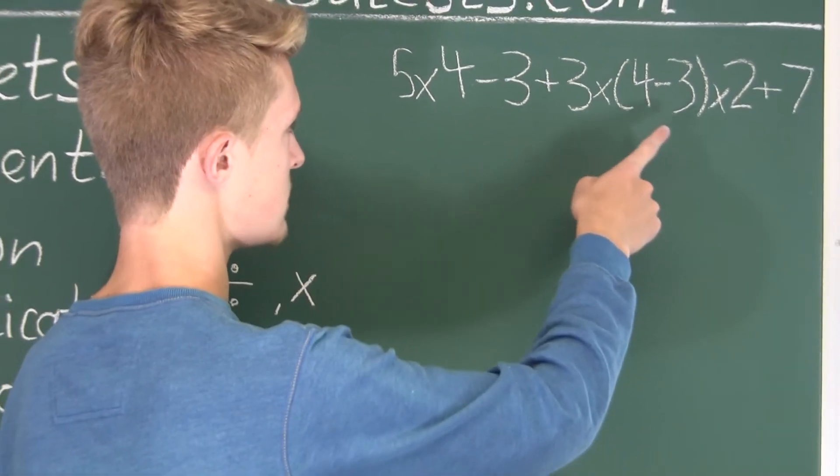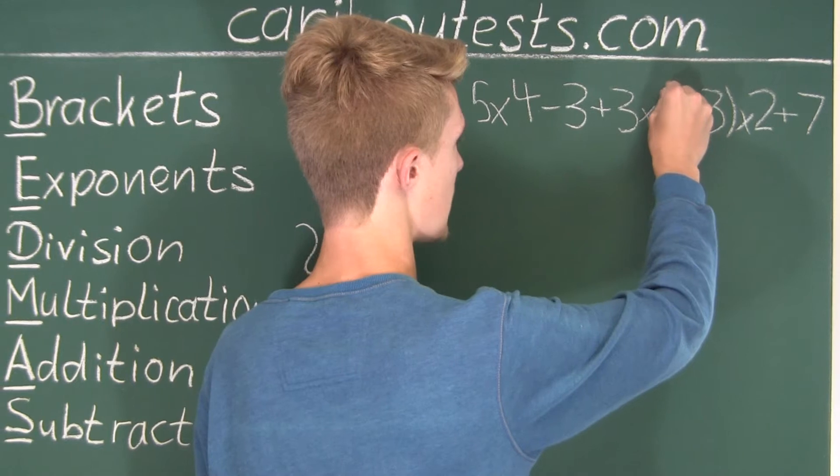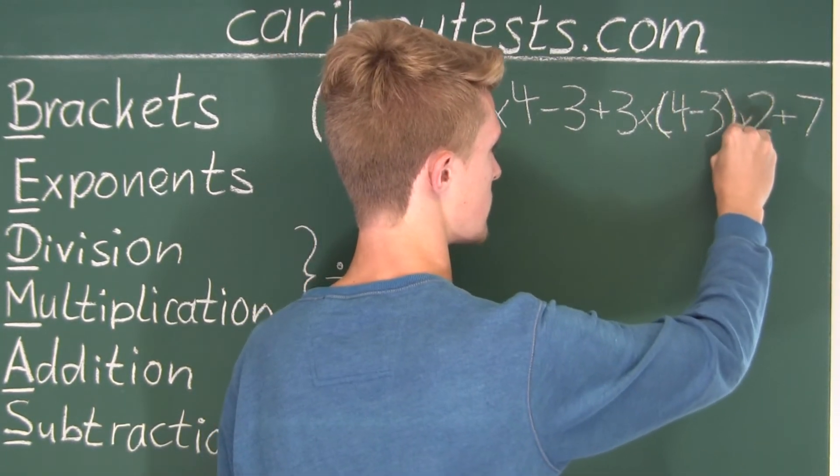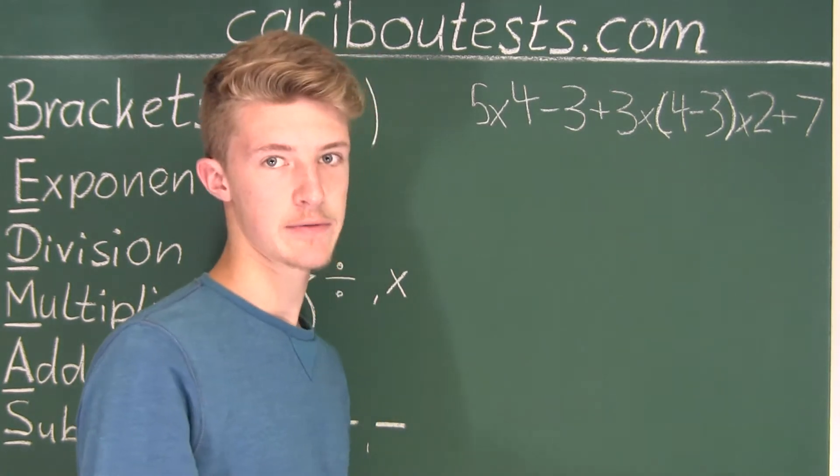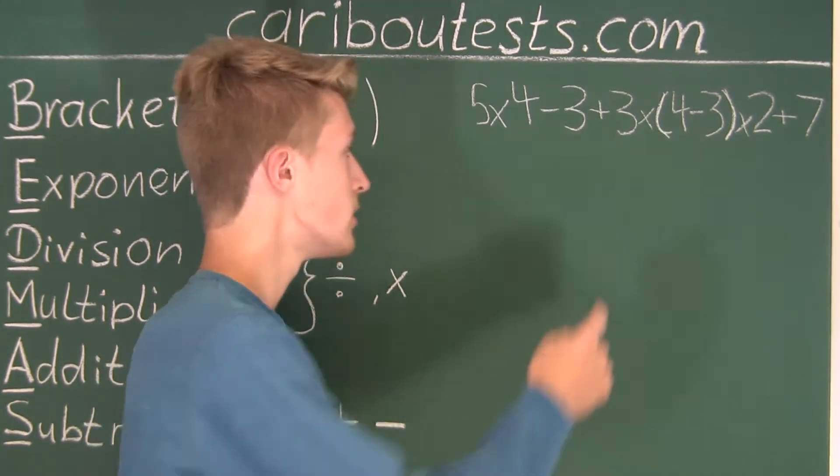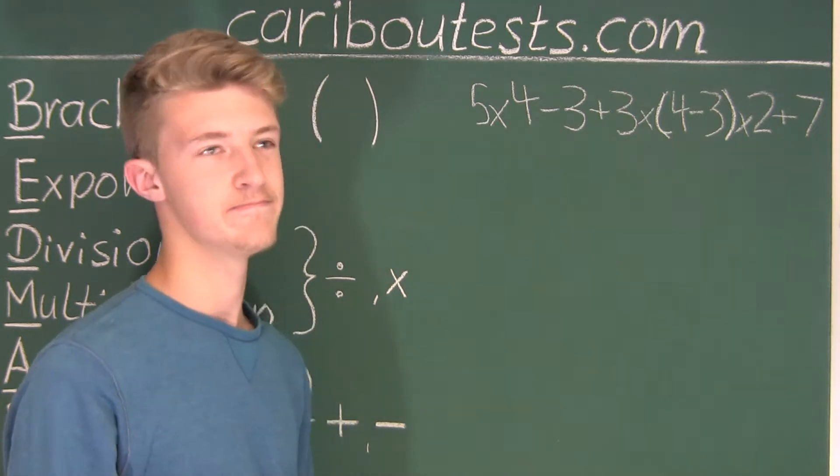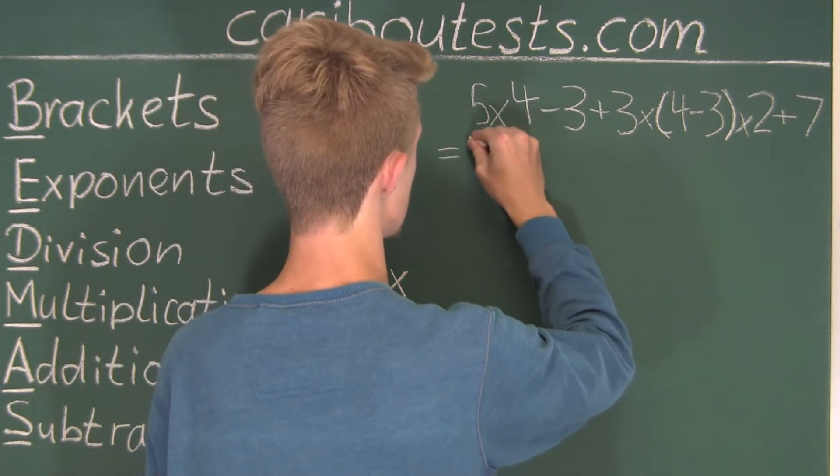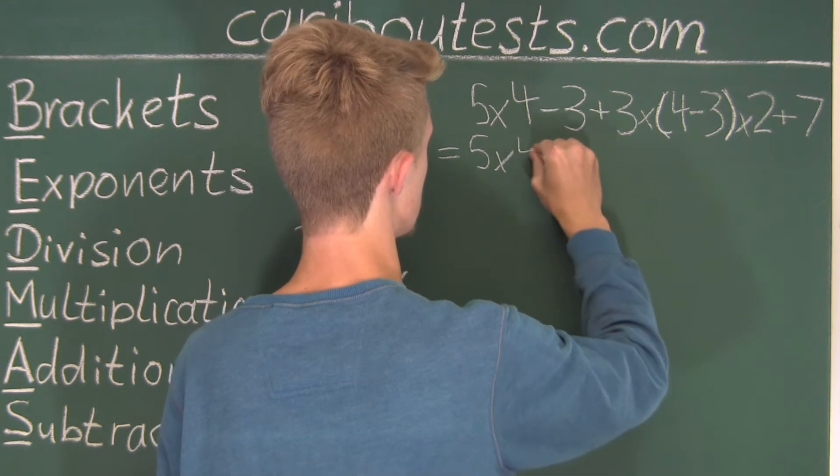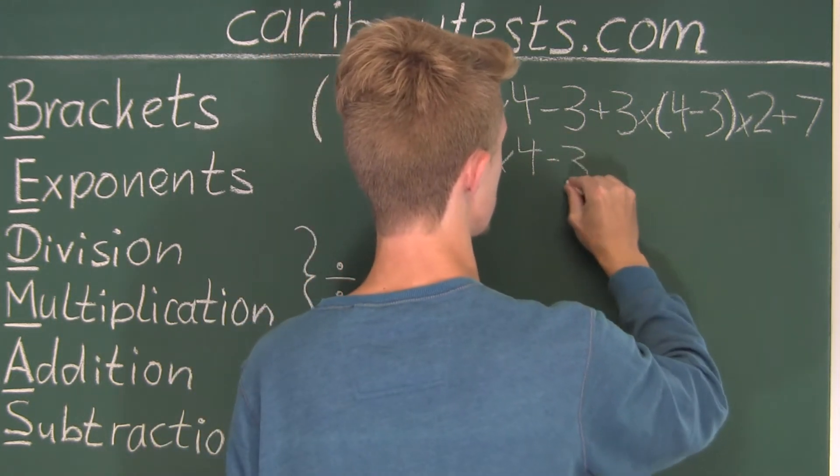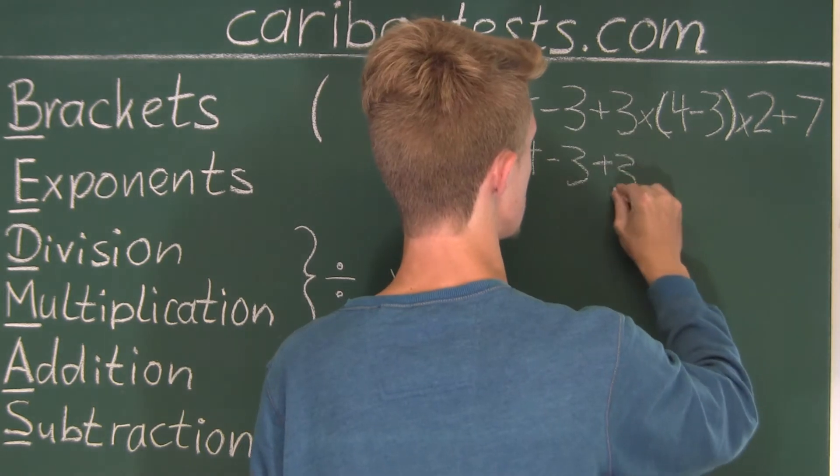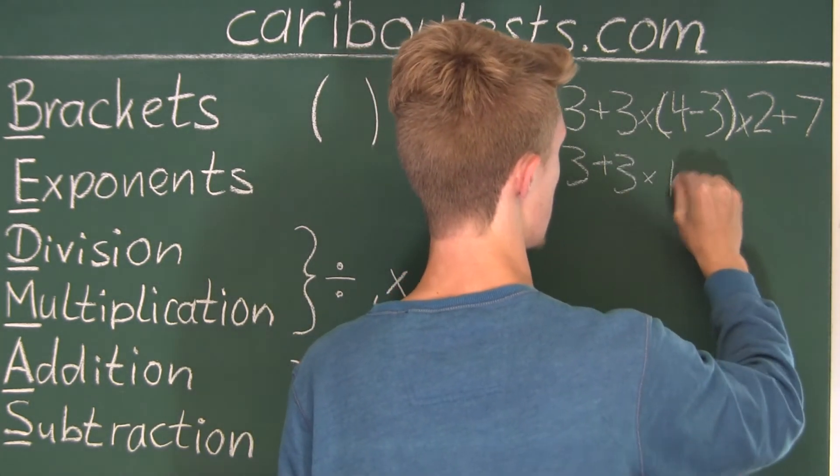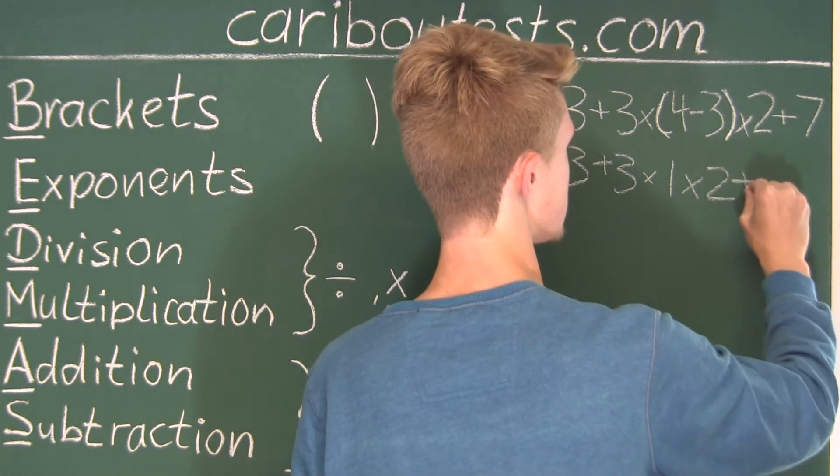Okay. And as we can see, here we have a bracket. We have two brackets around the 4 minus 3. Alright. So, that means that we have to first do whatever is in those brackets. And 4 minus 3 is 1. So, then we have times 1, and then times 2, plus 7.